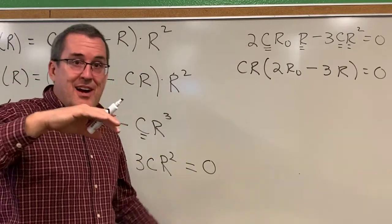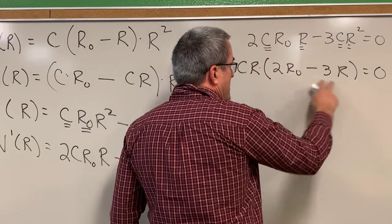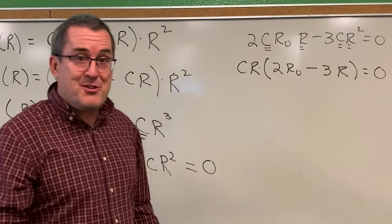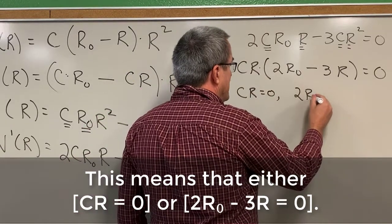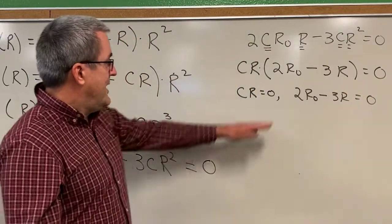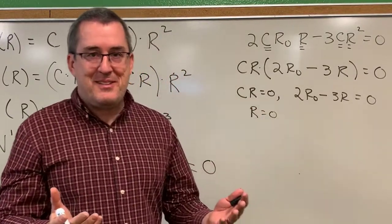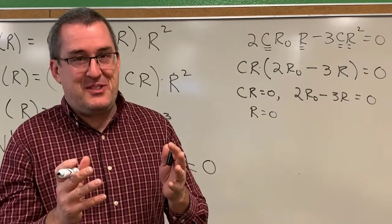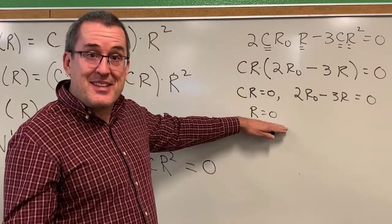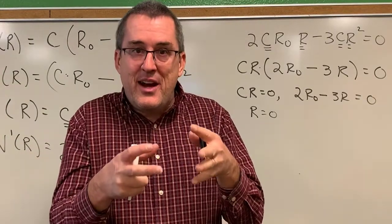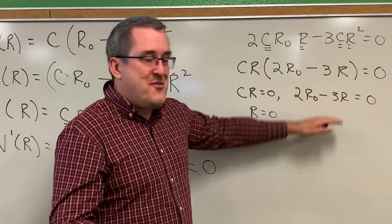We're interested in the maximum velocity — the place where the derivative is zero. We now have a product: CR times the quantity 2R sub zero minus 3R equals zero. The only way you can multiply two quantities and get zero is if one of the quantities is zero. So either CR equals zero, or 2R sub zero minus 3R equals zero. In the first case, if we divide both sides by C, R equals zero — meaning the trachea is closed and velocity is zero. That is not a maximum velocity; that would be a minimum. We're interested in the relationship between the trachea at rest and its radius during a cough.